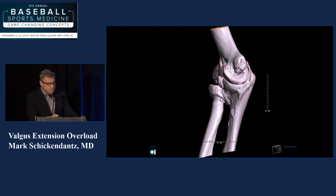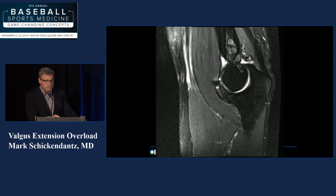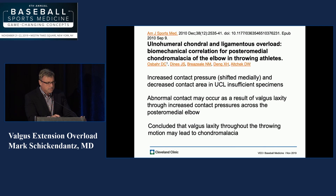You can also see some spurring in the front and a loose body in this example. On MRI, this is typically what you see in the back of the elbow — synovitis, loose bodies, spur formation. In more advanced disease, you can also see spurring of the tip of the coronoid process.